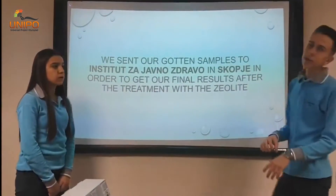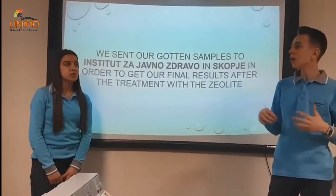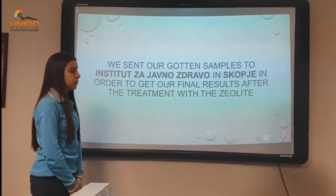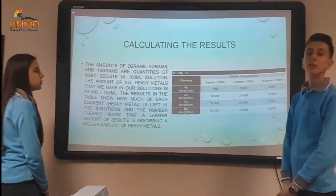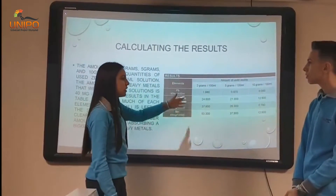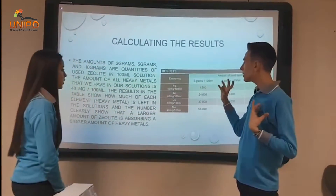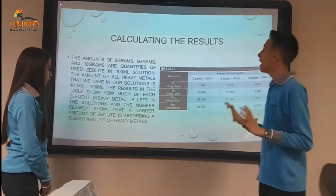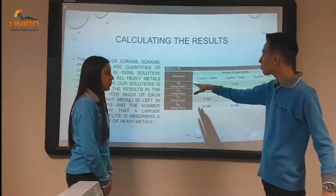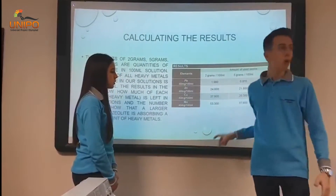Then we sent our prepared samples to the Institute of Hemija, a small laboratory for chemical research and analysis here in our capital, Skopje, and waited for our results. After we got our results, we made tables and represented the data. In this table, the remaining amounts of heavy metals in the solution are shown. The initial amount was 40 milligrams per 100 milliliters of solution, and as we can see, the smallest remaining particles correspond to the lowest amounts when compared to the others.